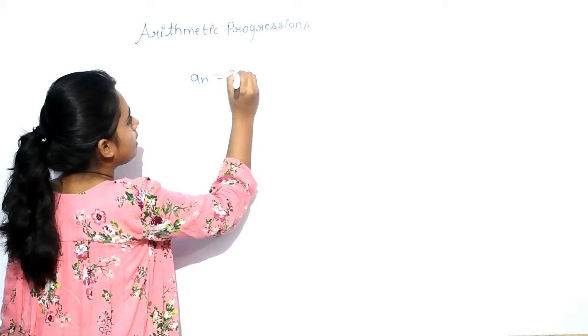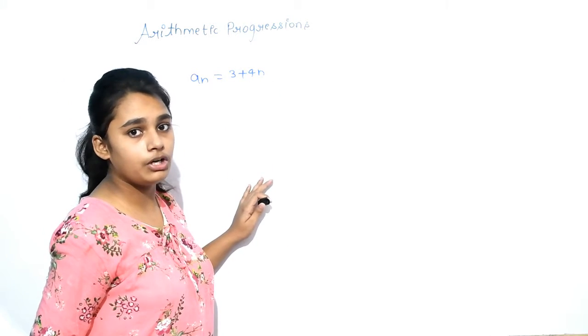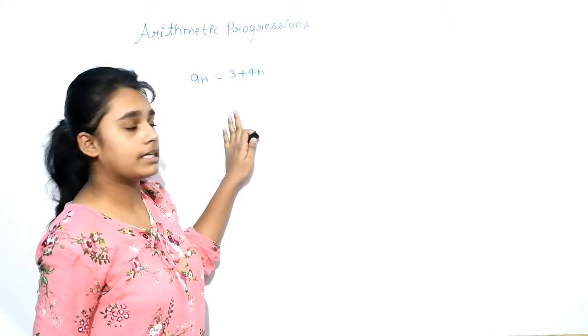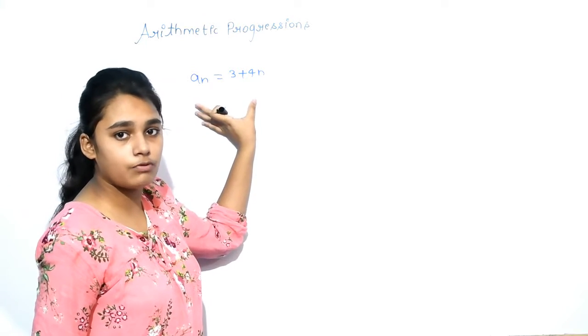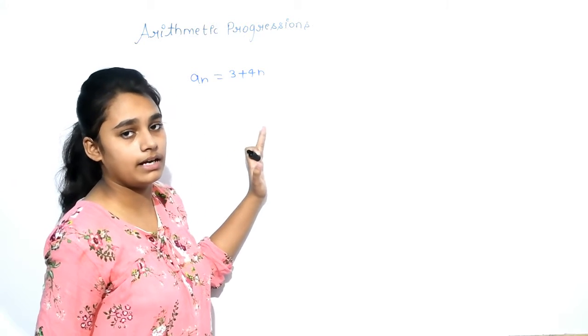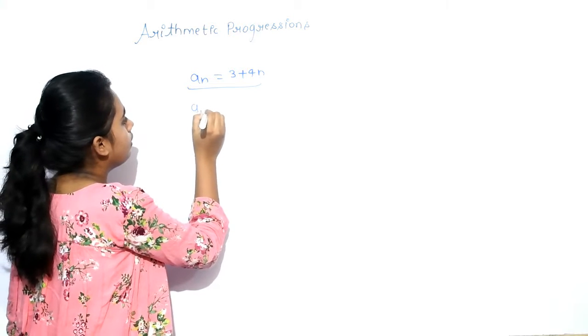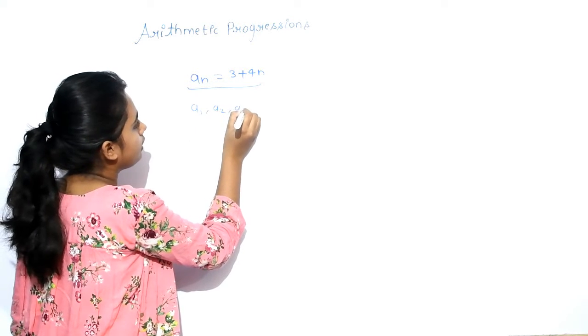AN equals to 3 plus 4N. As you know from my previous video, I told you about how to find AN. But in today's question, AN is given in this form and we have to find the AP. Means our first term, second term, third term and others. How can we find our A1, A2, A3, etc.